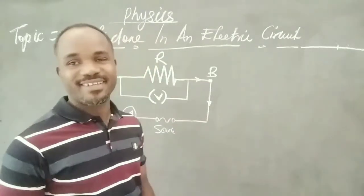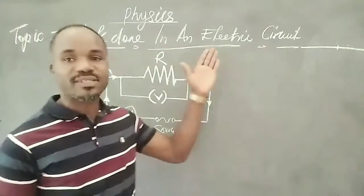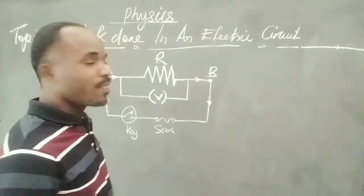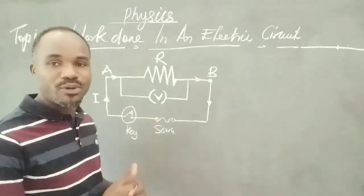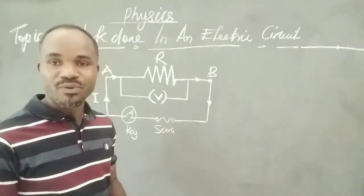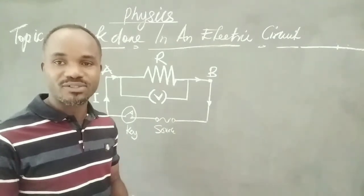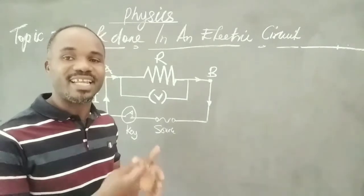Hello, my audience. Today we are going to look at work done in an electric circuit. The diagram on the board is a simple schematic representation of an electric circuit. What we are going to learn here is how work is done or can be done in an electric circuit.